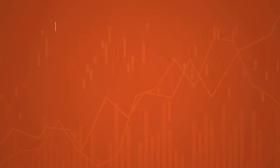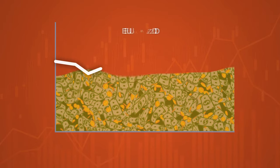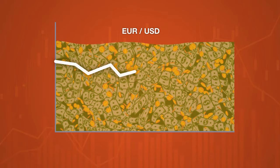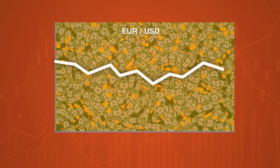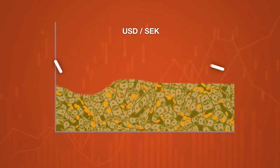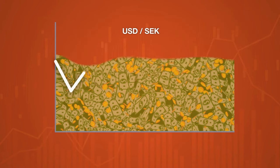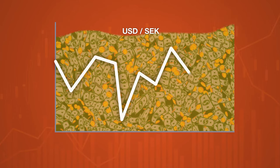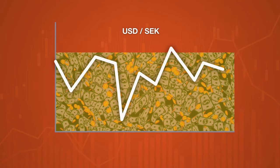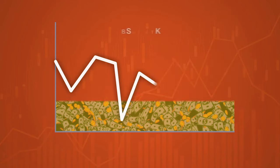Generally speaking, the level of liquidity is determined by how much money flows through the market and how many traders want to buy a particular asset. A decrease in liquidity will lead to large jumps and gaps in the quotations. The volumes of buy and sell orders during such a period can change many times.